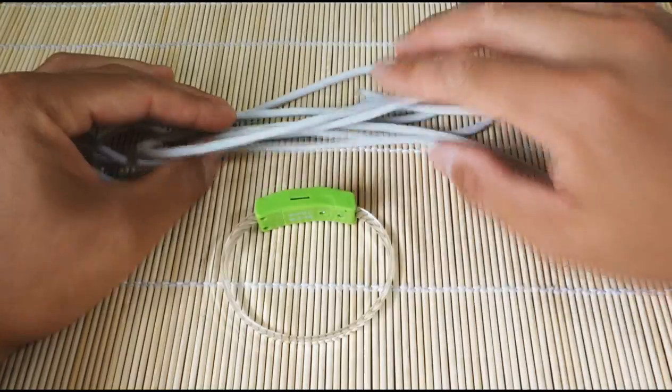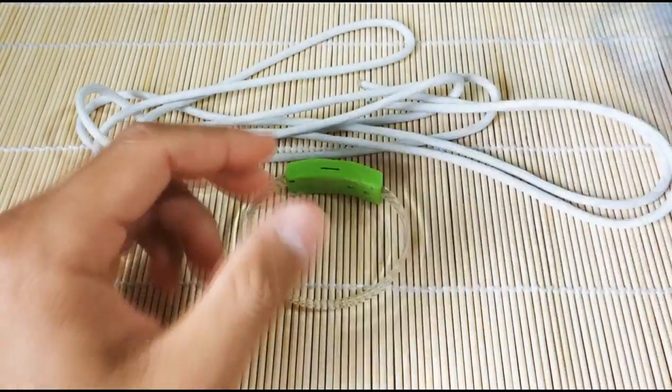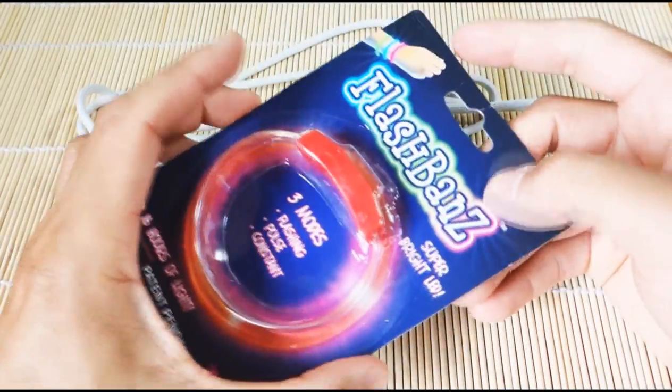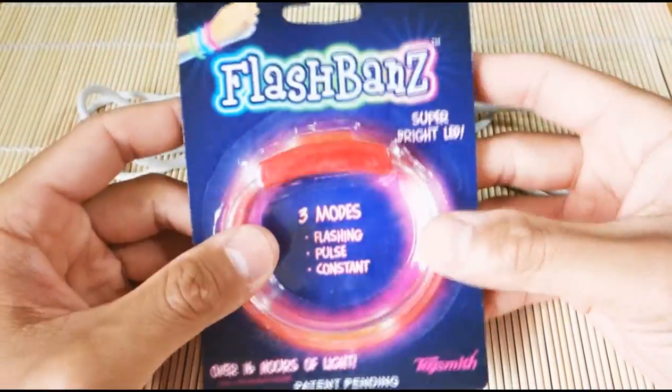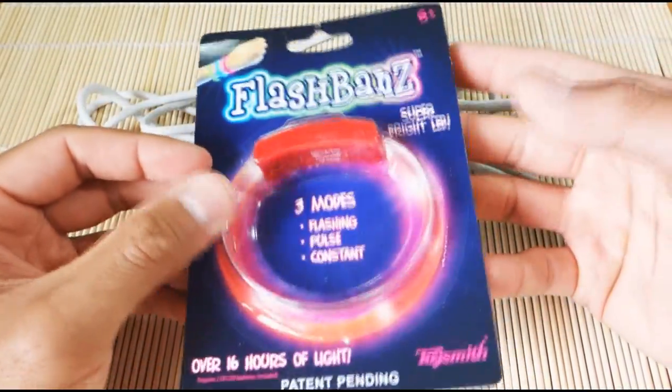Alright, so I've got my paracord ready and I've got my flashband here. And this is what the flashbands look like in their package. These are very cheap. You can get them at Walmart. I know the Walmarts in the States have them. I live in Canada, so the Walmarts here didn't really have any, so I actually ordered these online. But they're very affordable. They're Chinese-made, so they're very cheap.